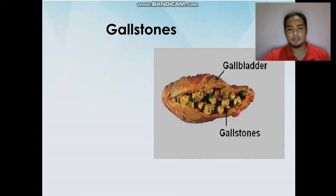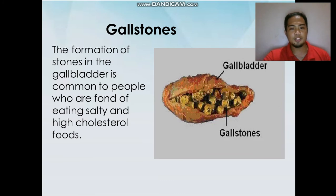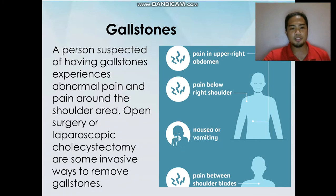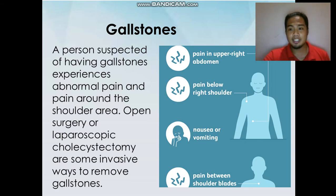Gallstones. The formation of gallstones is common in people who eat salty and high cholesterol foods. A person suspected of having gallstones experiences abnormal pain around the shoulder area. Open surgery or laparoscopic cholecystectomy are some invasive ways to remove gallstones.